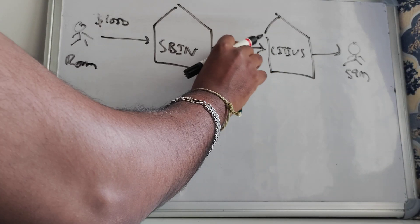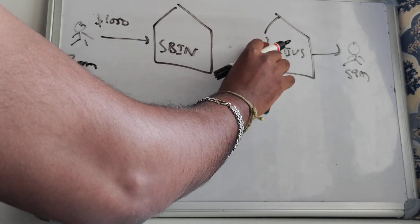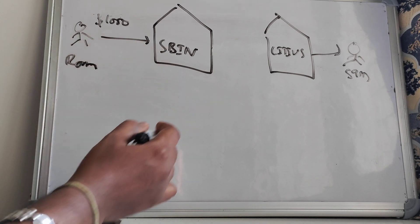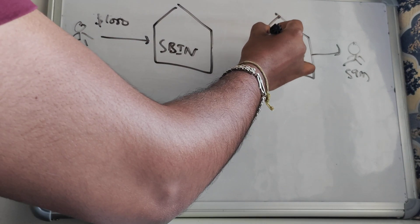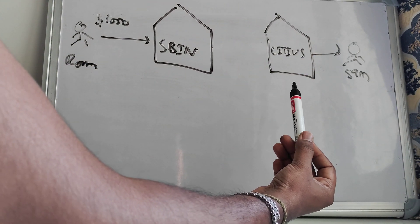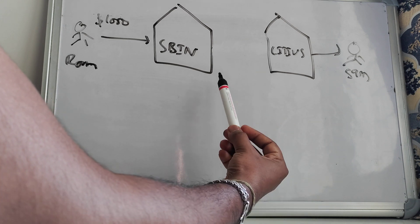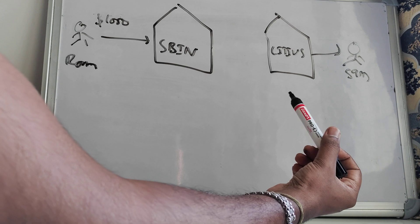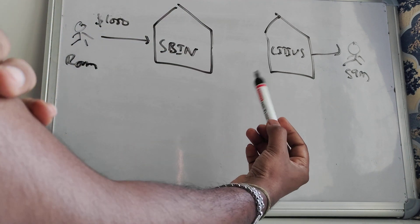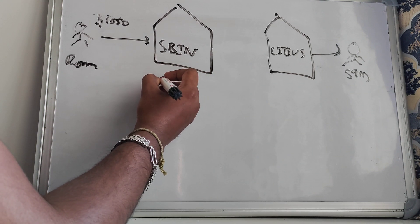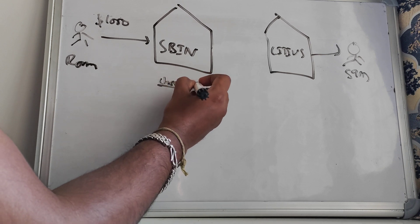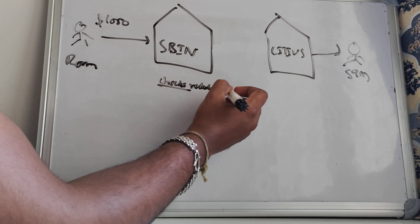Ram uses his mobile net banking channel to initiate this transaction. SBIN has to take some action so that a message reaches CityUS, which will help CityUS understand it has to debit the SBIN account and credit Sam's account. There are two things SBIN needs to check before sending the SWIFT message. The first check is related to RMA.